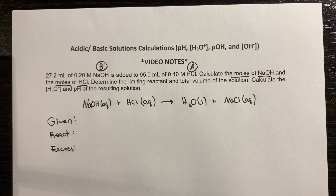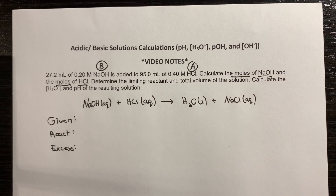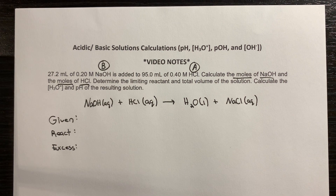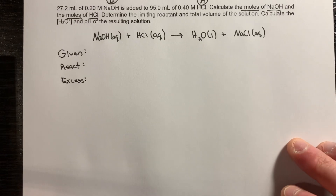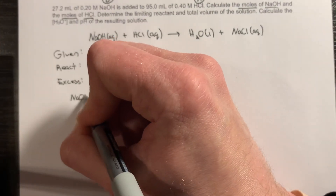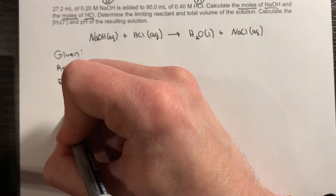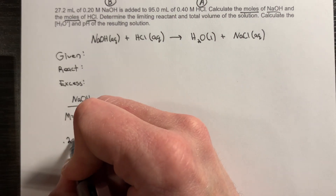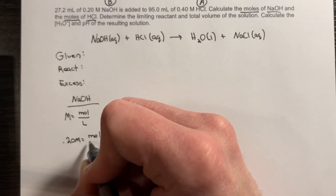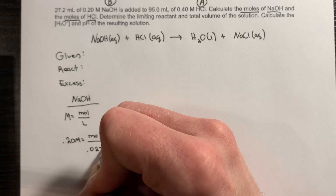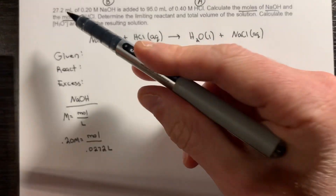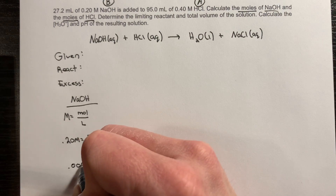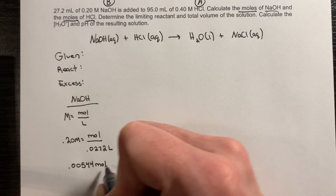In order to figure out how many moles I'm given of my base and acid, I have to use the concentration and the volume. Concerning sodium hydroxide, molarity is equal to moles over liters. We're given the molarity of 0.20 molar, so this will equal moles of my base over the volume, which is 0.0272 liters. To convert milliliters to liters, I simply divide by 1,000. This results in 0.00544 moles of sodium hydroxide.